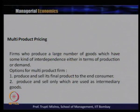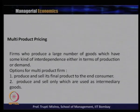Multiproduct pricing is specifically relevant to firms that produce a large number of goods which have some kind of interdependence, either in terms of production or demand. The options for a multiproduct firm are: either they produce and sell final products to the end consumer, or they produce and sell only intermediary goods that are used by other firms to produce final products.